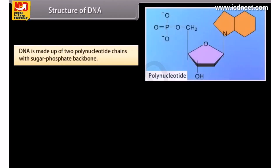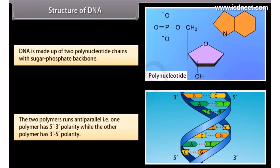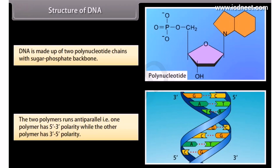Structure of DNA. DNA is made up of 2 polynucleotide chains with a sugar-phosphate backbone. The two polymers run anti-parallel — that is, one polymer has 5-prime to 3-prime polarity, while the other polymer has 3-prime to 5-prime polarity.